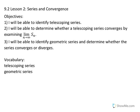9.2 Lesson 2: Series and Converges. Our objectives in Lesson 2 are: 1. Identify telescoping series. 2. Determine whether a telescoping series converges by examining the limit of the nth partial sum as n approaches infinity. 3. Identify geometric series and determine whether a geometric series converges or diverges.